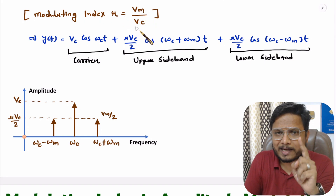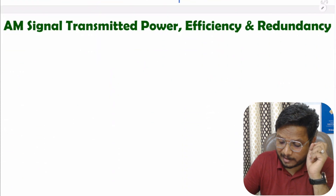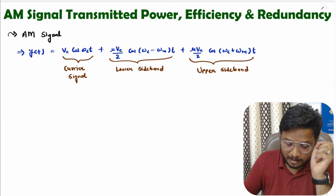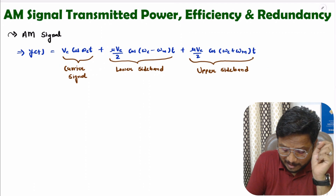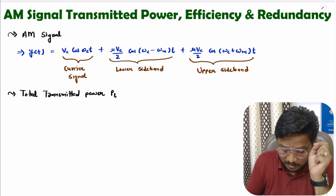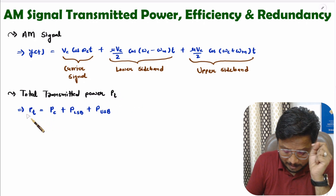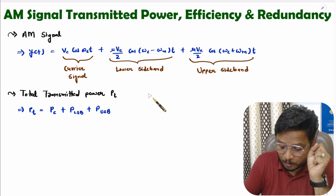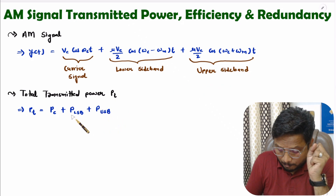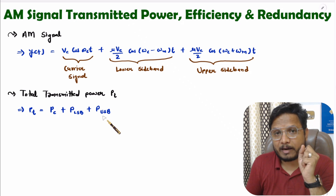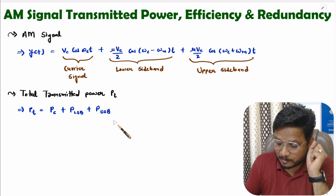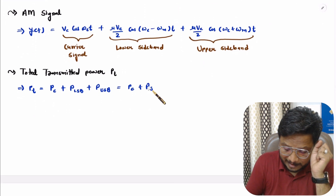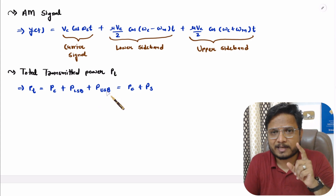Using this equation, I will derive transmitted power. The AM signal has three frequency components, so the total transmitted power PT is the algebraic sum: power due to the carrier signal PC, plus power due to the lower sideband PLSB, plus power due to the upper sideband PUSB. The combined sideband power PS equals PLSB plus PUSB. There are a few basics you need to understand.